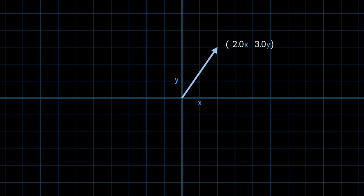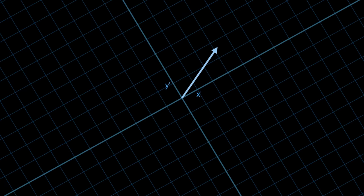But these components depend on our arbitrary choice of axes. We can choose different ones. Here's, for example, a different coordinate system.